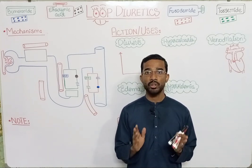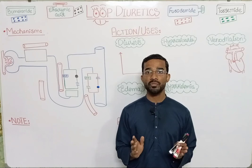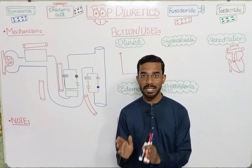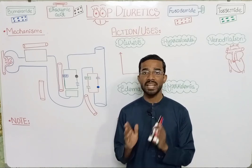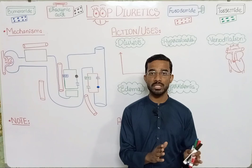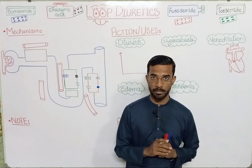So in loop diuretics, you will see four drugs in total: bumetanide, ethacrynic acid, furosemide, and torsemide.